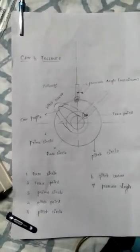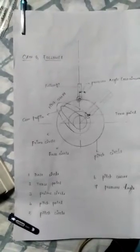And then fifth one is pitch circle. It is the circle passing through pitch point and concentrating with the base circle.